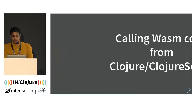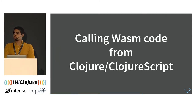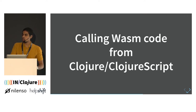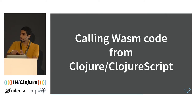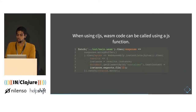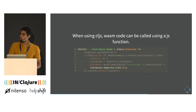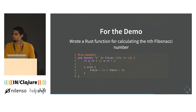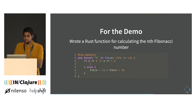Now, calling Wasm code from Clojure: if you already have Wasm as a .class file, you can call it directly through Java interop. But I'm going to focus on the more relevant topic — calling Wasm from ClojureScript — because Wasm is more of a front-end technology. When using ClojureScript, Wasm code can be called using a JS function: you fetch the Wasm file and then call the specific function from it. I'll show a small demo.